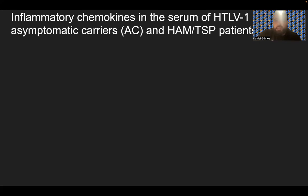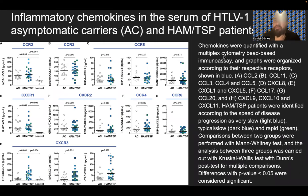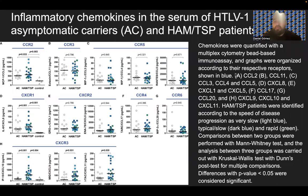Inflammatory cytokines in the serum of HTLV-1 asymptomatic carriers and HAM-TSP patients are shown for CCL2, CCR2, CCR3, CCR5, CXCR1, CXCR2, CCR4, CCR6, and CXCR3 in picograms per milliliter. These chemokines were quantified by a multiplex cytometry bead-based immunoassay, organized according to their respective receptors. HAM-TSP patients were identified by disease progression speed. A Mann-Whitney test and Kruskal-Wallis with Dunn's post-test were performed; p > 0.05 was considered significant.